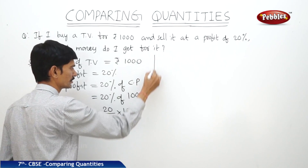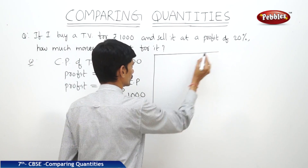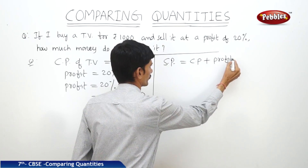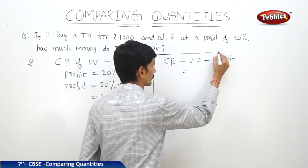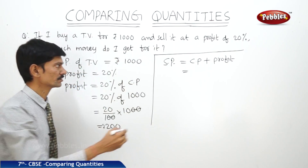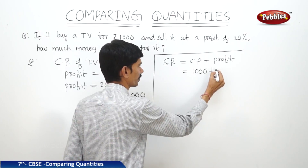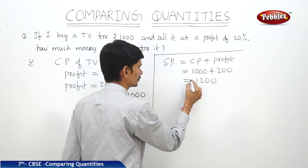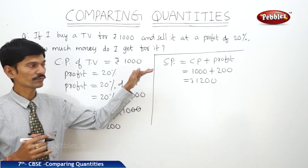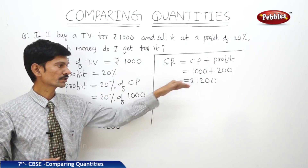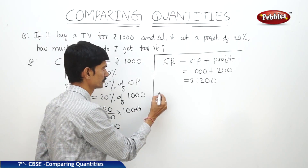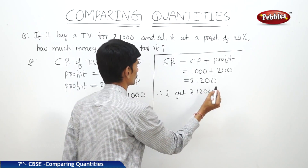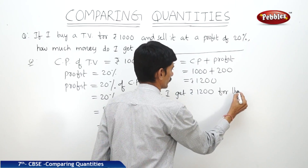The profit is 200 rupees. Now we find the selling price. Selling price equals cost price plus profit, which is 1,000 plus 200, equals 1,200 rupees. So this is the selling price of the TV. I get 1,200 rupees for the TV.